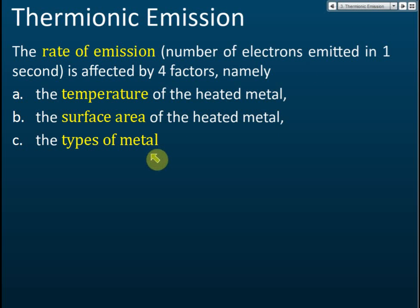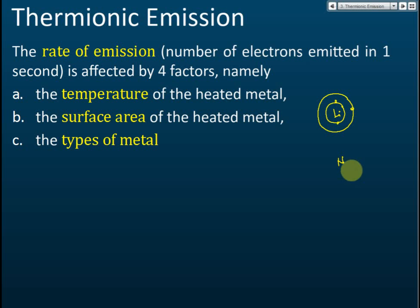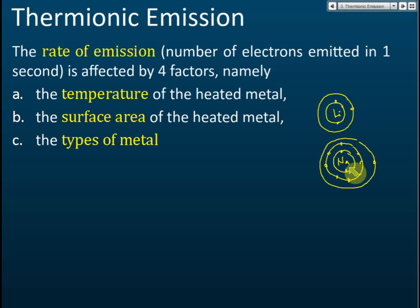The third factor is the type of metal. For certain metals, the attraction force between the electrons and the nucleus is very weak. For example, lithium has an electron arrangement of 2, 1 and sodium has 2, 8, 1. Sodium can release electrons easier because the distance between the valence electron and the nucleus is very far, so the attraction force is relatively weak.